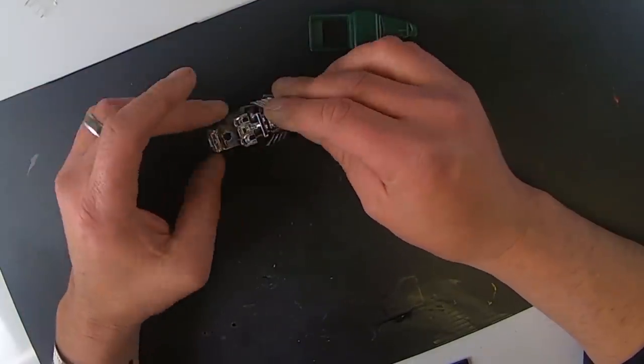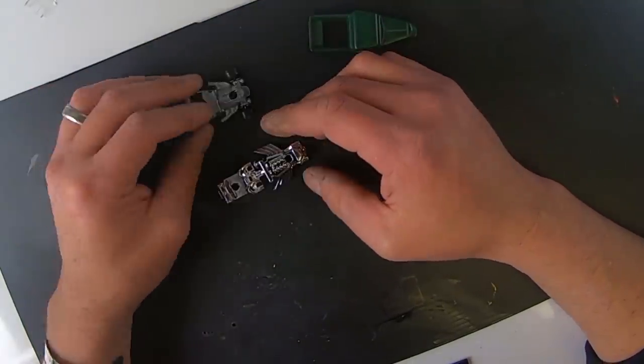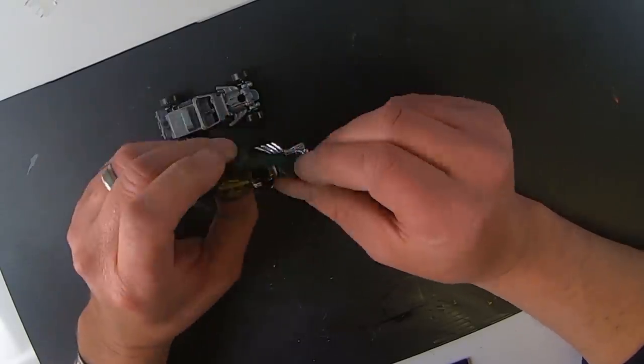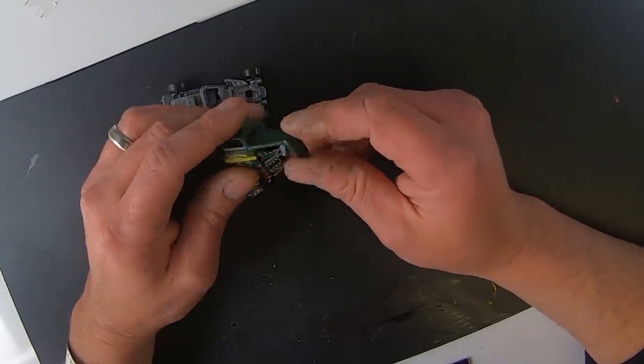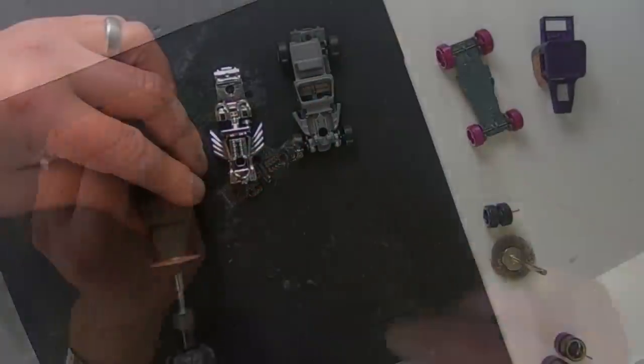So right now, after taking it apart, the big thing is fitting everything, seeing how it's all going to kind of go together. Obviously, the hood has to come off. So that's step one.